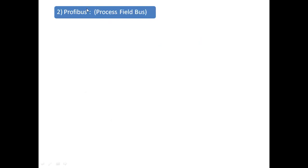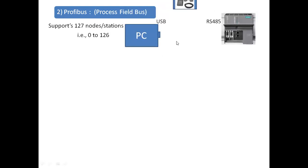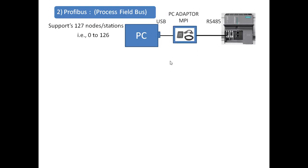Next we come to Profibus — one of the main and mostly used protocols in the field. Profibus stands for Process Field Bus: 'fi' means field, 'b' means bus, and bus means traveling — your data is traveling. It supports up to 127 nodes or stations, starting from 0 to 126. For example, from PC to PLC we use a PC adapter MPI for communication.